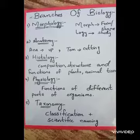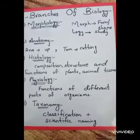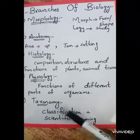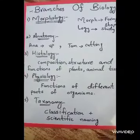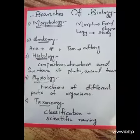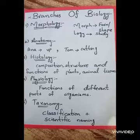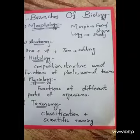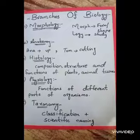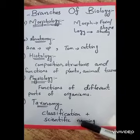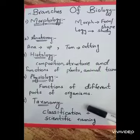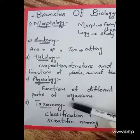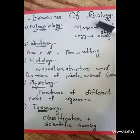The next branch is taxonomy. Taxonomy is the study of classification and scientific naming. Classification means when you divide any living organism into groups or subgroups — that process is called classification. And when you do the grouping, you give each group a proper name, which is called scientific naming. So the study of classification and scientific naming of living organisms is called taxonomy, and taxonomy is also a branch of biology.